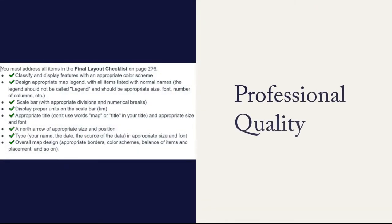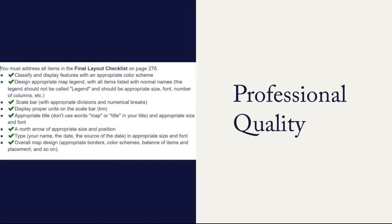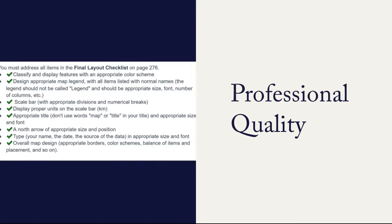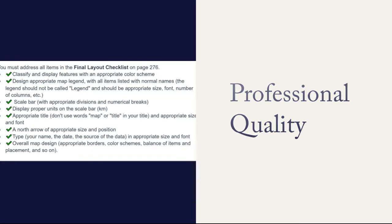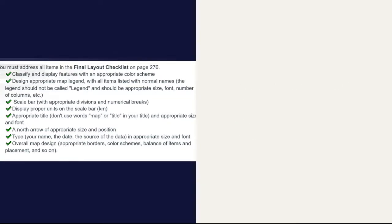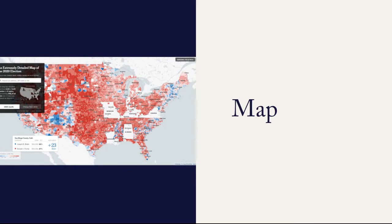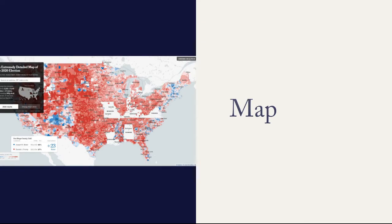After you gather all your data, you'll start designing your map. Show me how you can create a great-looking map by incorporating the final layout checklist items from Chapter 7. I want to see that you can create a professional-looking map with a great layout, that you've taken consideration of scale and symbology, and that it tells an exciting story.